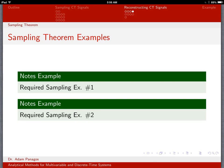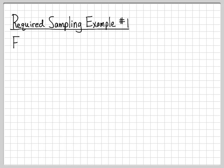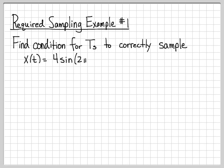Let's go ahead and work a couple of specific examples now that we know what the sampling theorem is and that it tells us how to properly sample a signal. This first example, required sampling example number one, we are going to find a condition on the sampling period, T sub s, to correctly sample this continuous time signal. So x(t) equals 4 sin(2πt) plus cosine of 5πt plus 0.1 plus cosine of πt.